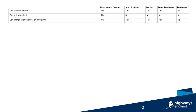When a version is created, there are three tick boxes available: available to reviewers, allows discussions and comments, and forbid reviewers from seeing and commenting on others' discussions. The Document Owner, Lead Author, Author, and Peer Reviewer are able to change these tick boxes. The Reviewer cannot.